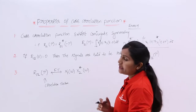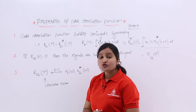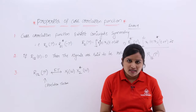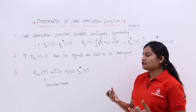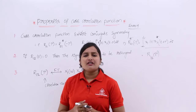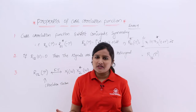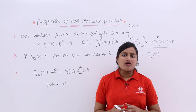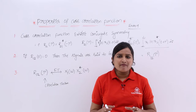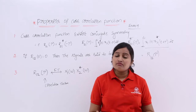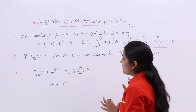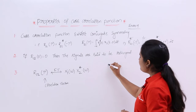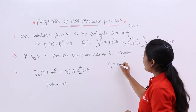Coming to the second property of cross correlation function: if R12 of 0 is equivalent to 0, that means the cross correlation function at origin is equivalent to 0, then the signals are said to be orthogonal. The cross correlation function will show maximum value at origin only, so if it is equivalent to 0, we consider R12 of tau.